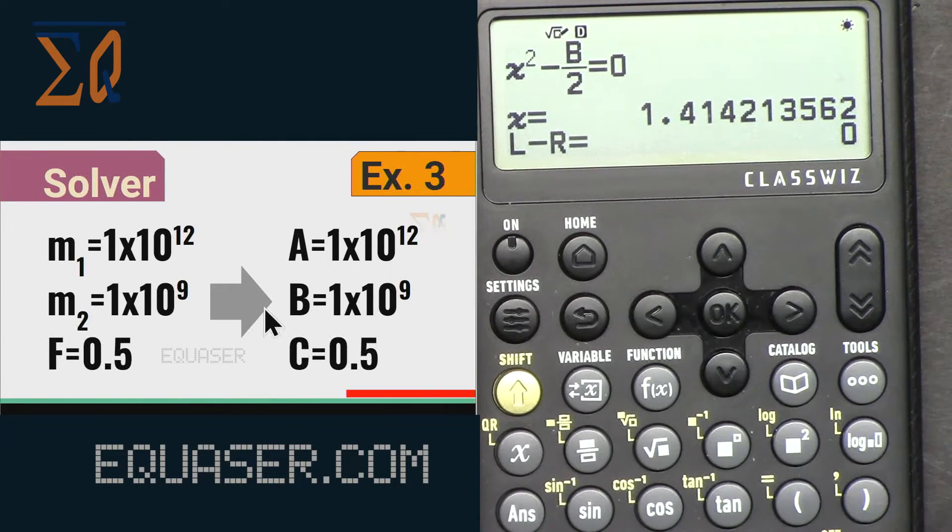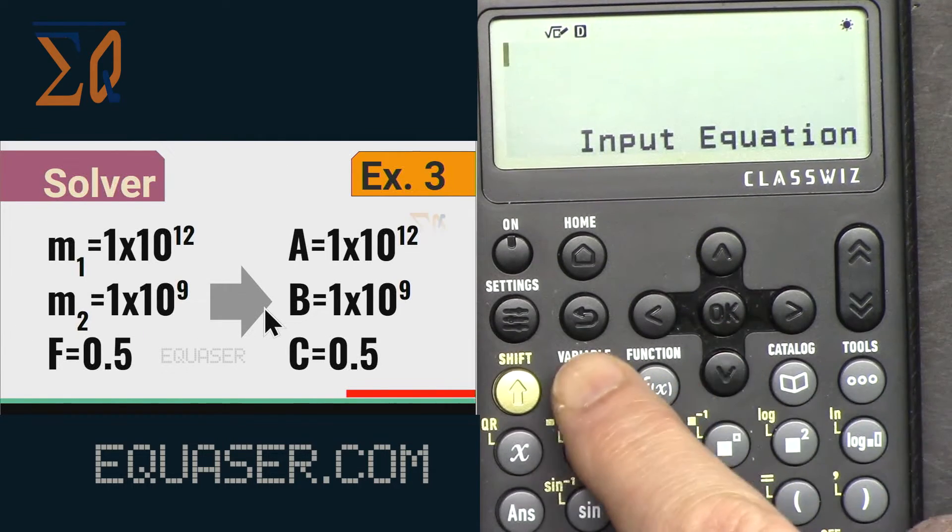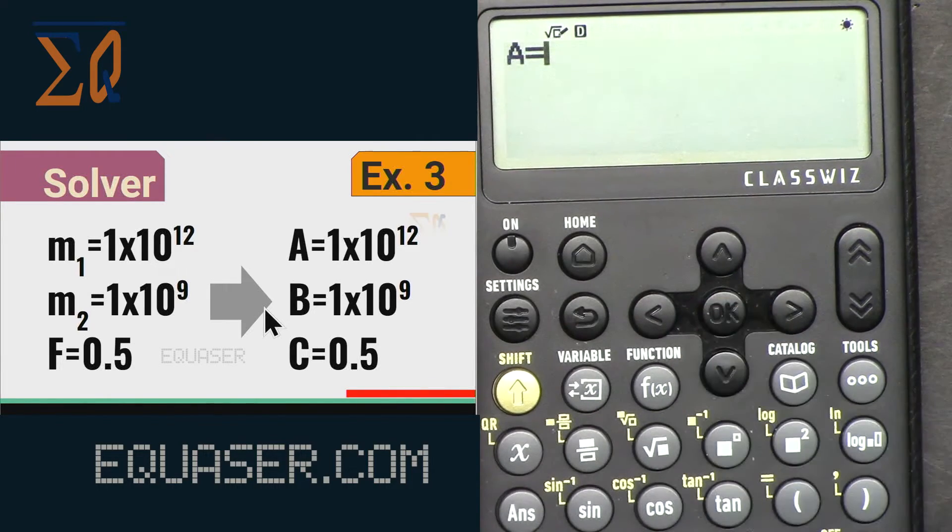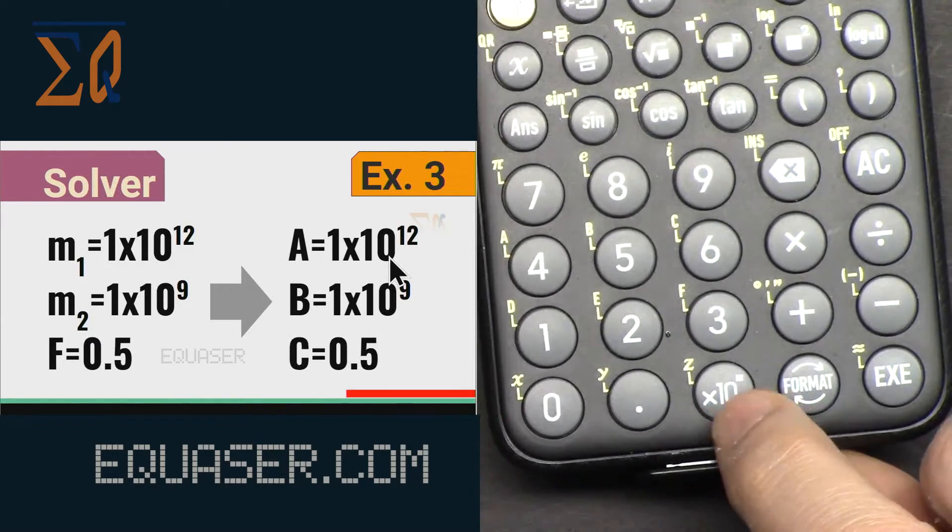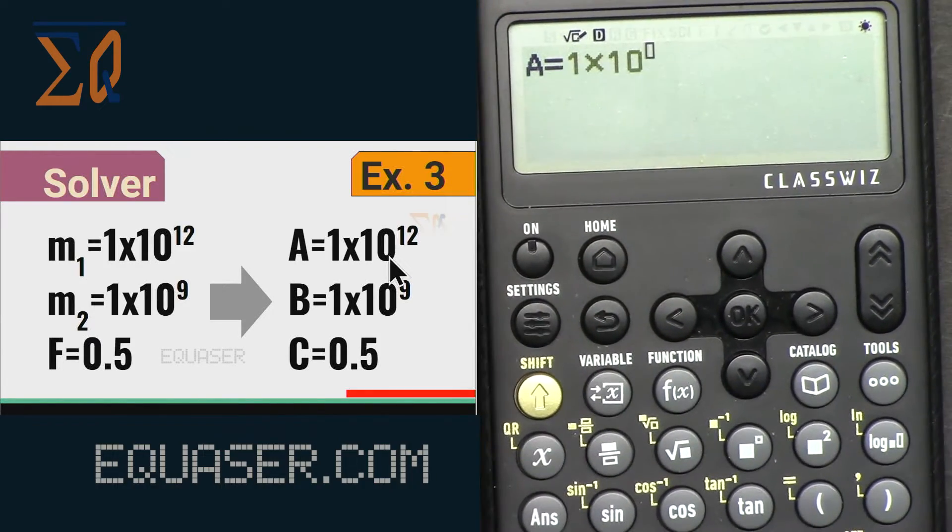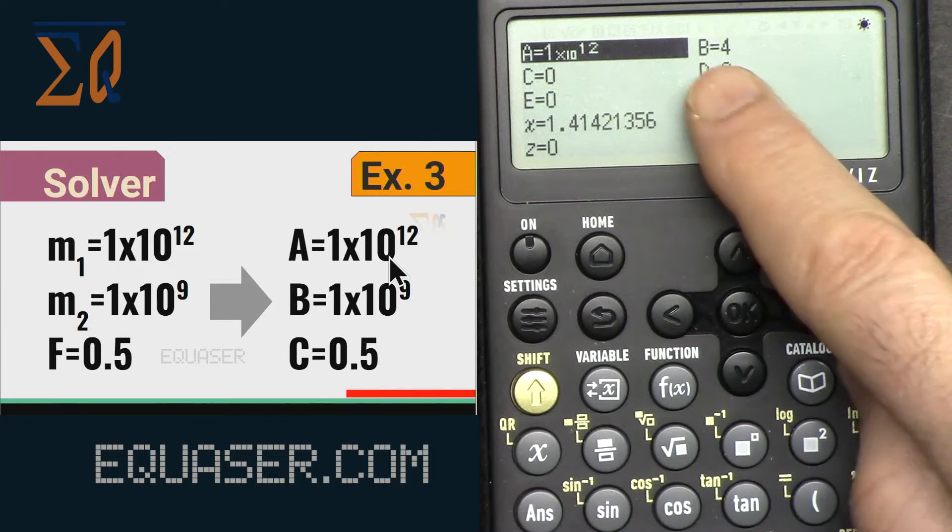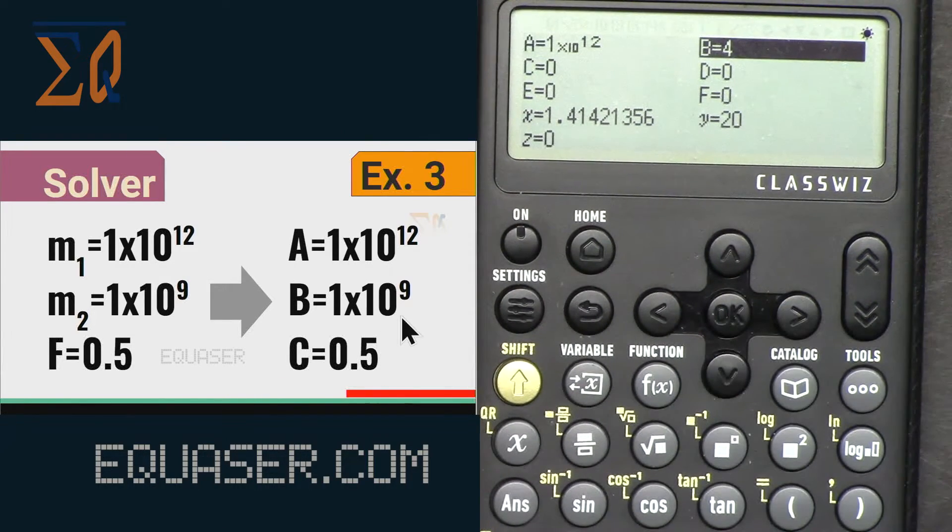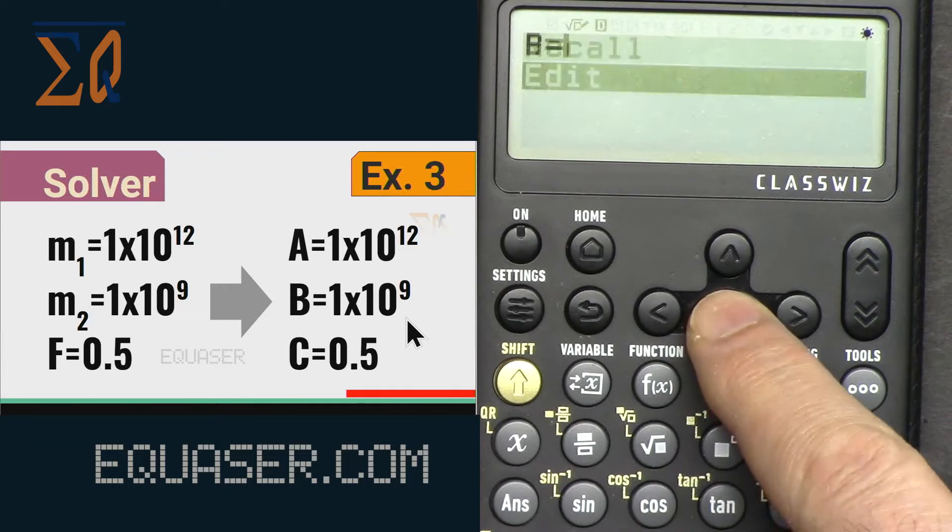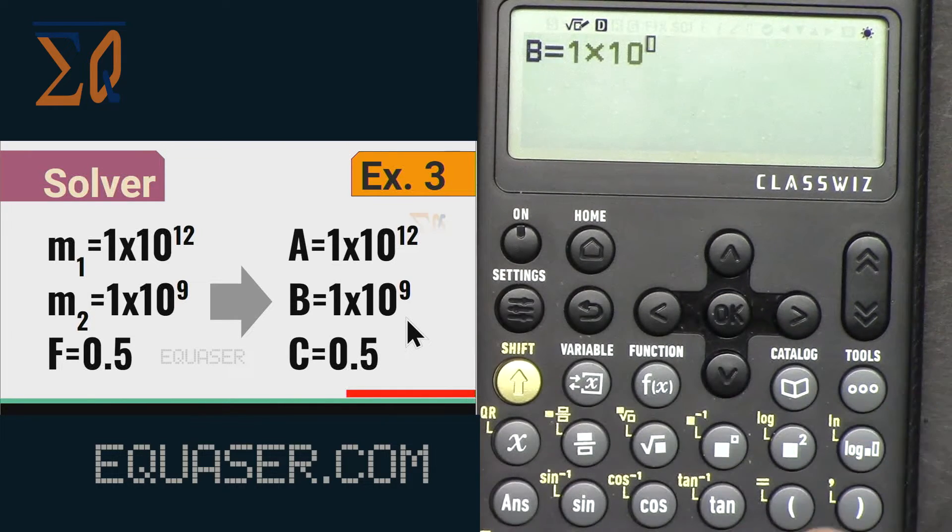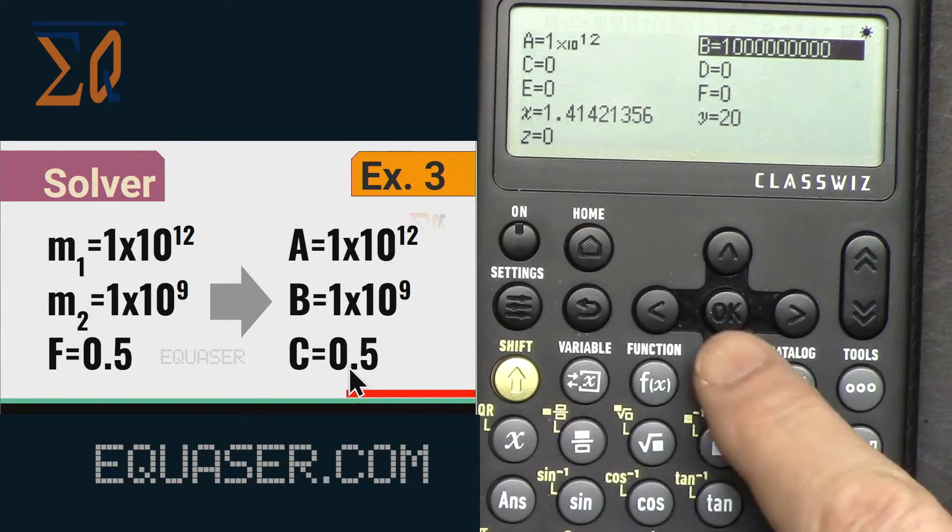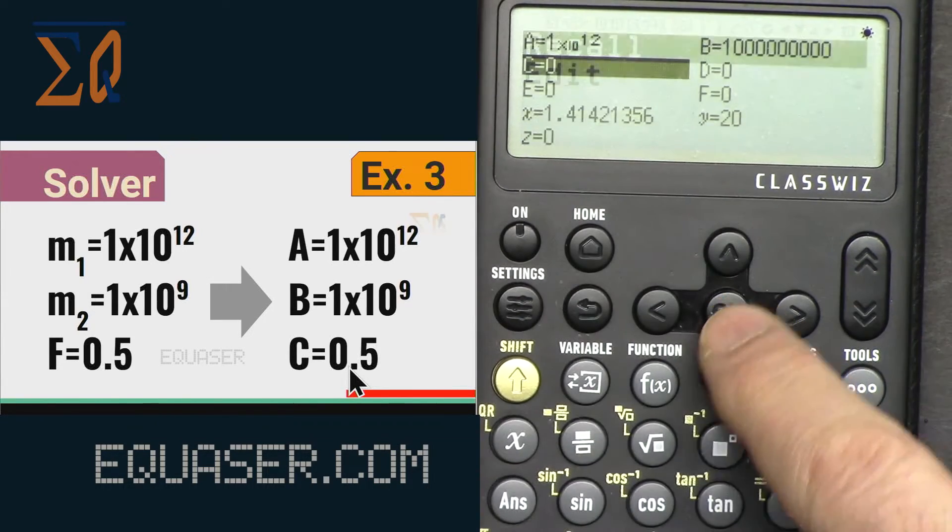So let's do that. All clear, and then equation. Let's go for a and edit. 1 times 10 to 12. 1 times 10, times 10, and then 12 equal. That's done. Let's go to b, 1 times 10 to the power 9. Edit, 1 times 10 to the power 9 and then that's done. For c, 0.5, go to c, edit, 0.5 and equal. All clear, that's done.